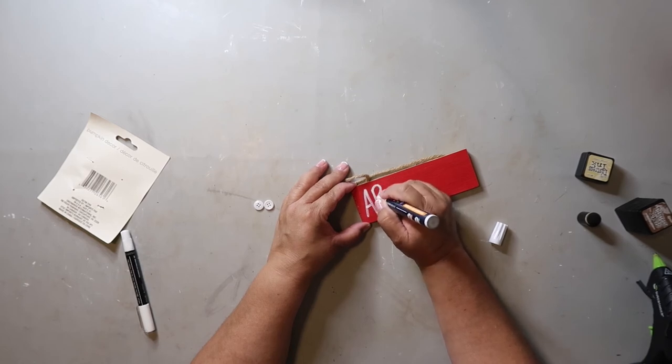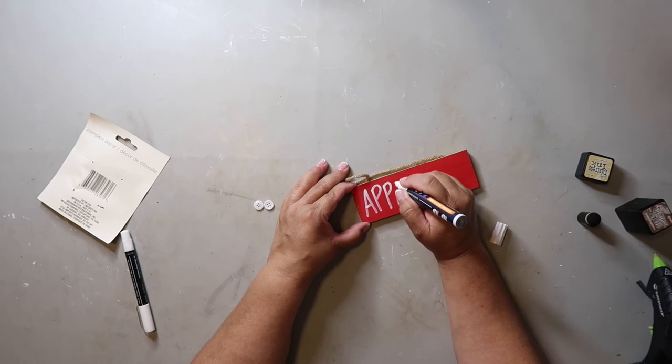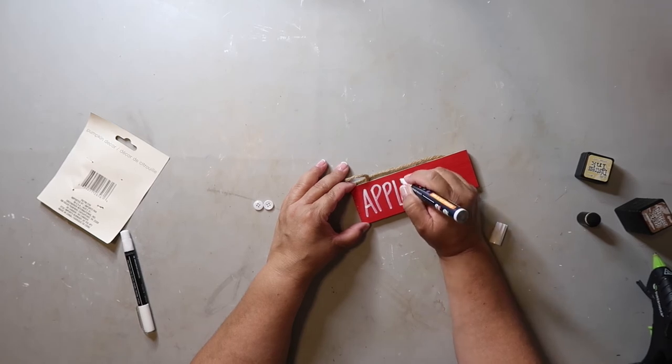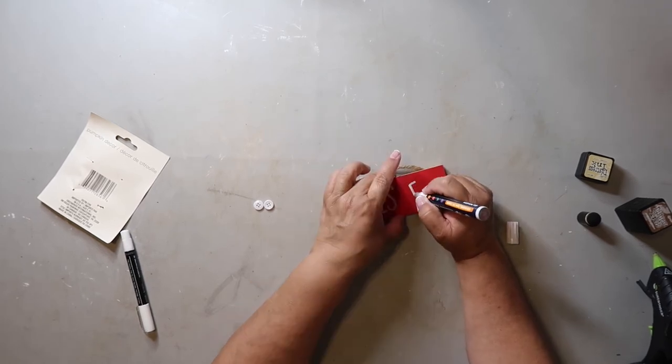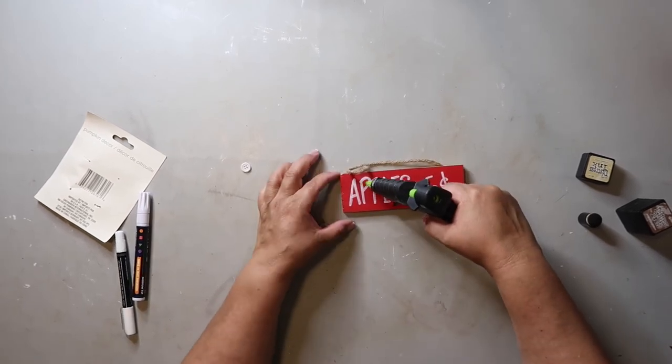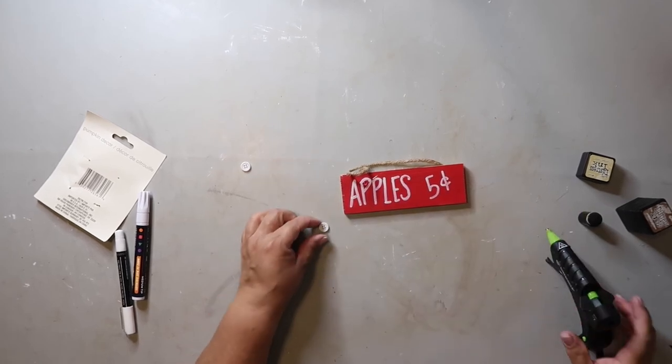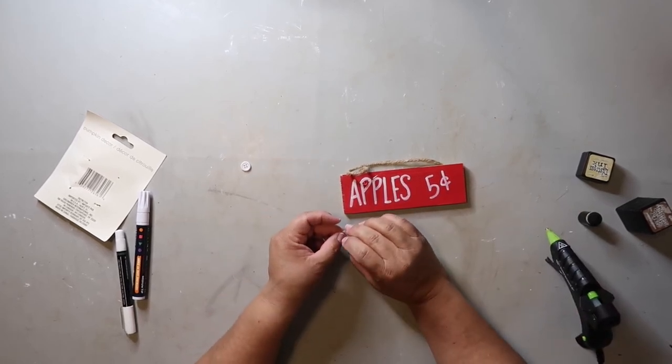And I'm taking my Artique paint pen in the color white, and I'm just writing out the word Apple, and then I'll add five cents. Next, I take my hot glue gun, and I put a little dab of glue, and then I'm going to put the button on top, trying to be careful not to burn myself.